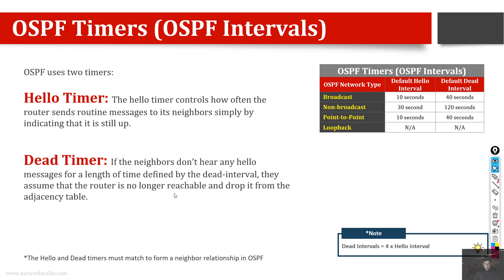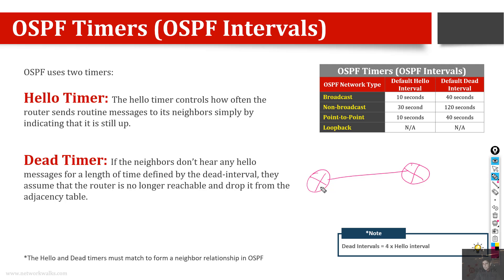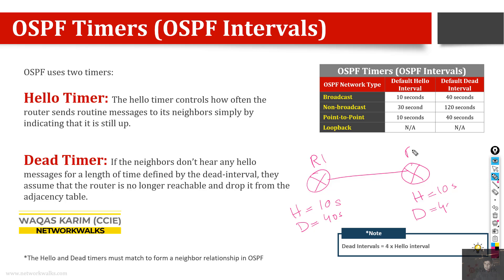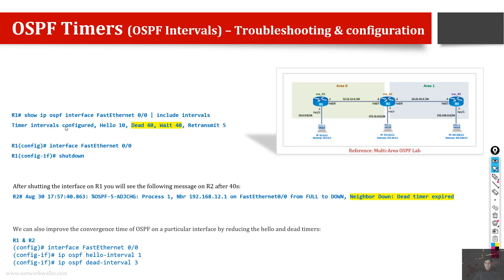An important point is that whenever two OSPF routers become neighbors or form an adjacency, the dead and hello intervals must match on both sides, because these values are configurable. By default on a point-to-point link, both routers have hello at 10 seconds and dead at 40 seconds. If we change one side — for example to 20 seconds — the neighbors will not come up because the timers are not matching each other.